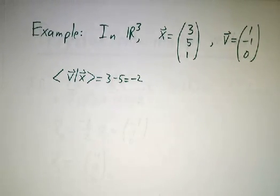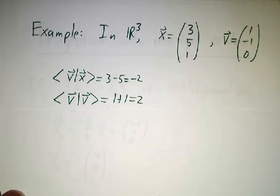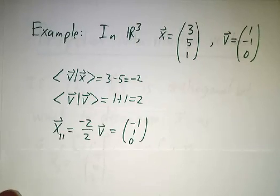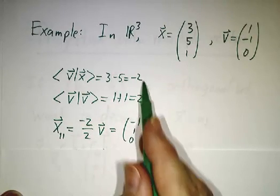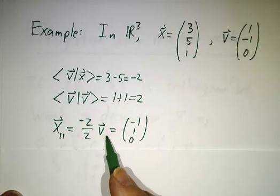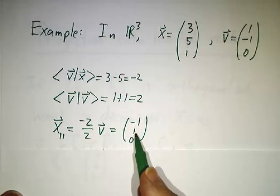So the inner product of v with x is 3 minus 5, that's negative 2. Inner product of v with v is 1 squared plus negative 1 squared, which is 2. And so x-parallel is negative 2 over 2 times v, so that's negative v. So that's (-1, 1, 0).